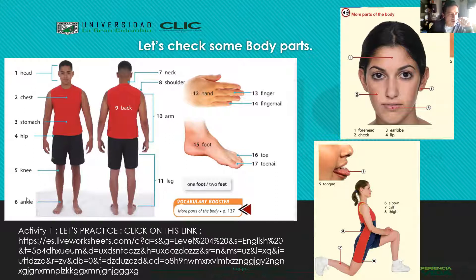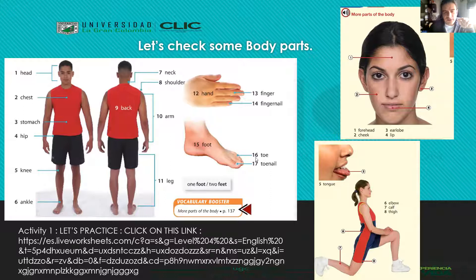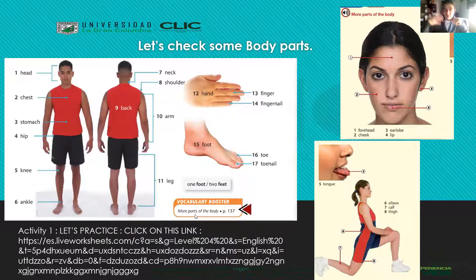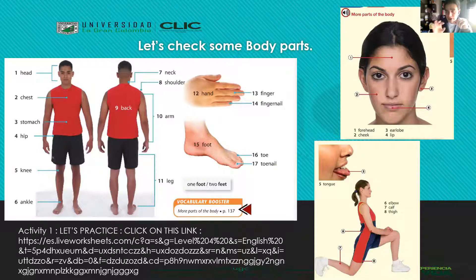So here I have the vocabulary: 1, 2, 3, 4, 5, 6, 7, 8, 9, 10, 11, 12, 13, 14, 15, 16, 17 - different parts of the body. I'm going to say each one so you know the correct pronunciation, and later we are going to practice with the first activity.